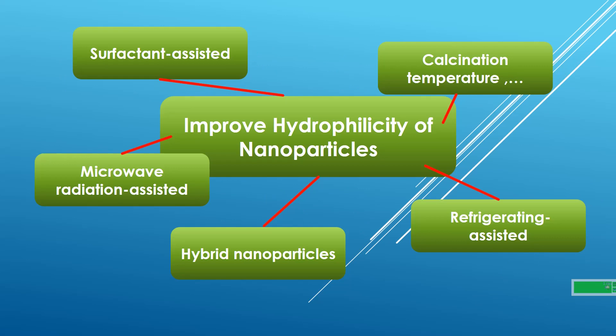You have some options to improve hydrophilicity of nanoparticles by sol-gel method. You can use surfactants, microwave radiation, you can put two nanoparticles together to make hybrid nanoparticles, you can use a refrigerating-assisted method, and also you can change the temperature of calcination, and so on.